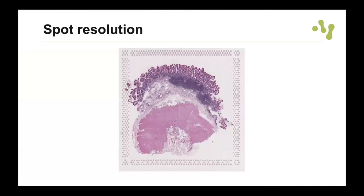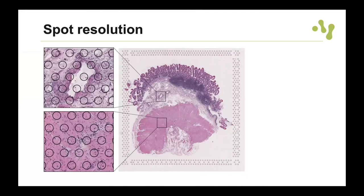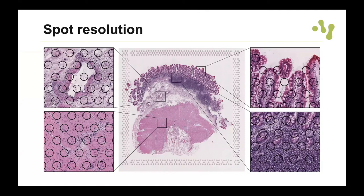This is a heterogeneous tissue type, with areas of quite low cell density — for example, a blood vessel surrounded by connective tissue where some spots only cover one or two cells, and similarly for muscle tissue. But in other parts of the tissue there are very high cell counts, which is also reflected in the number of genes and transcripts captured per spot.